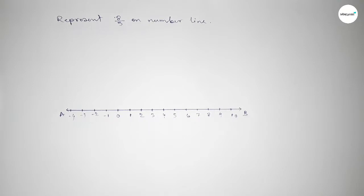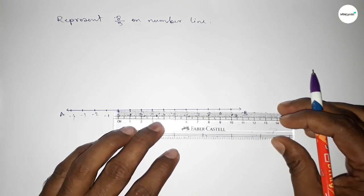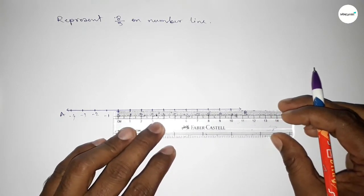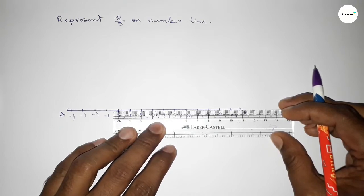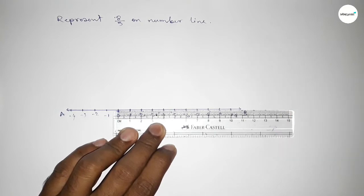Now we have to divide the distance between any two numbers into 5 parts. If you divide the distance between any two numbers into 5 parts, then the length of each part equals 0.2 units. First, dividing the distance between 0 to 1 into 5 parts.